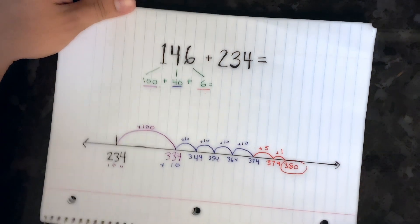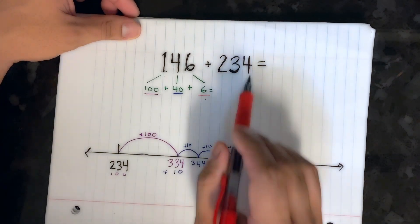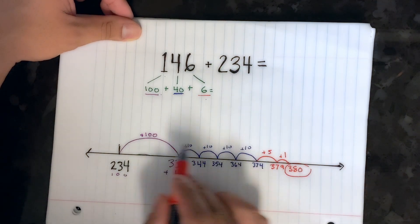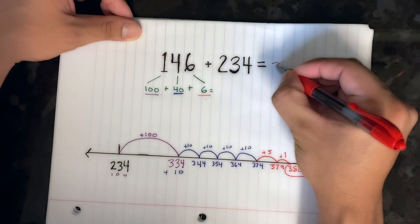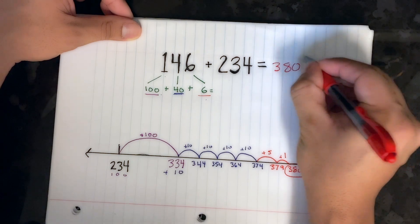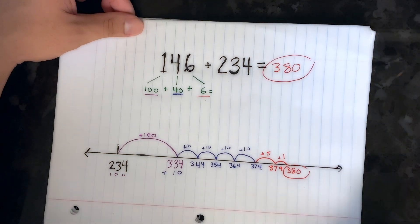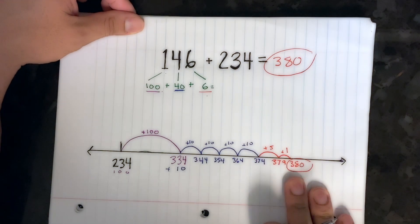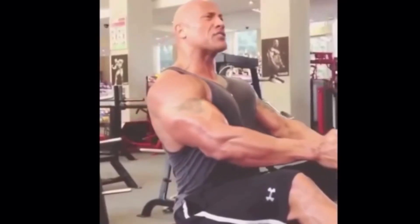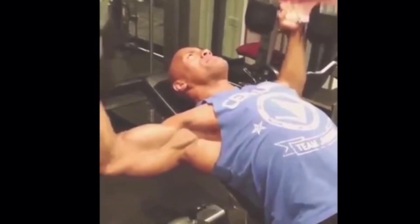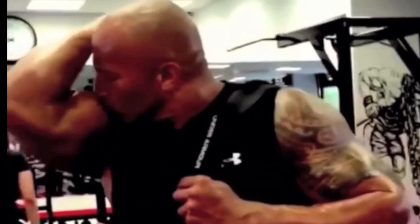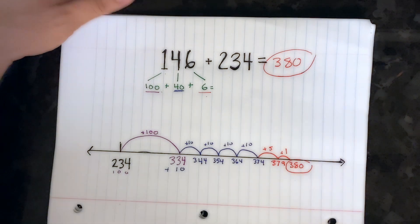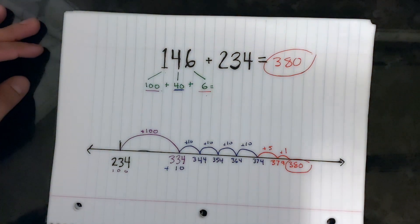And there is our answer! We started at 234 and jumped up 146 more, and we landed right at 380. That's adding using a number line. It's a little tough, you need to stay focused, but go ahead and try it and let me know how it goes for you.